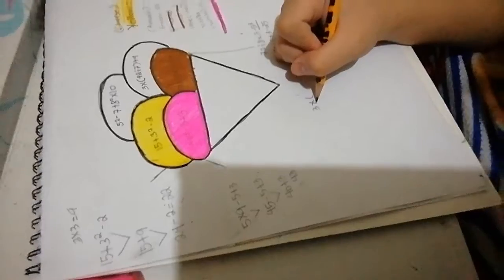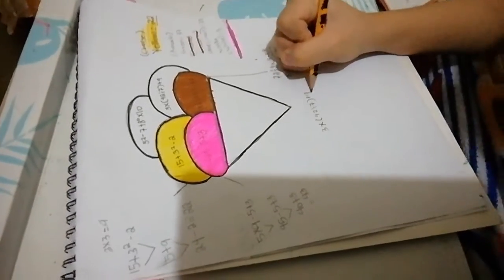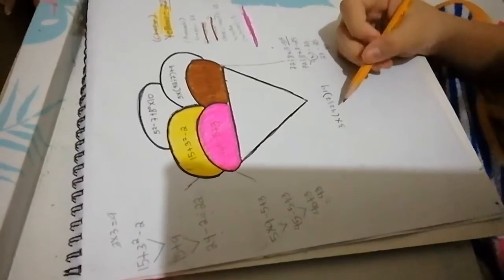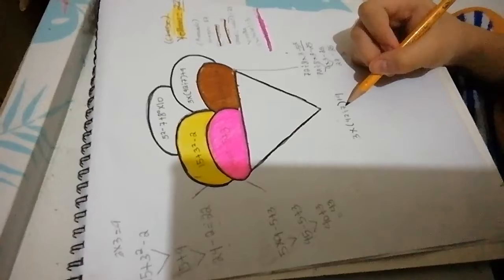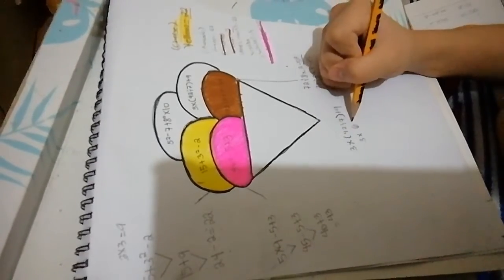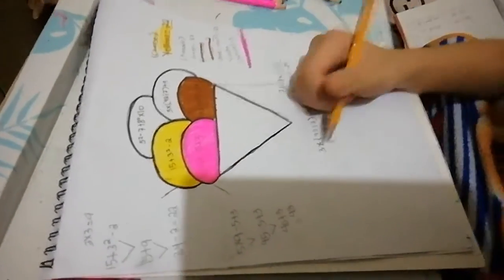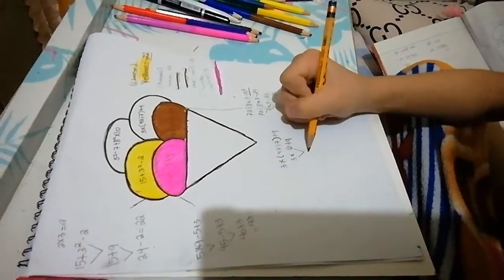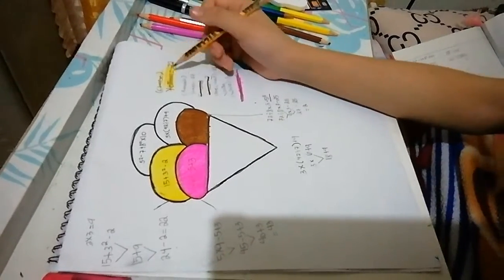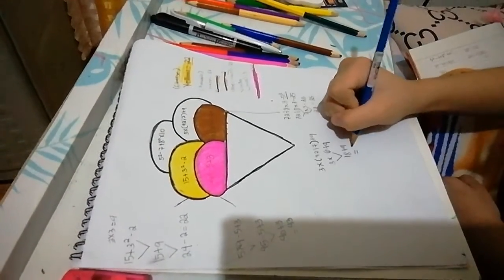3 times, parentheses, 42 divided by 7, close parentheses, plus 9. Since there's a parenthesis, we solve that first. 42 divided by 7 is 6. Then we bring down the 3 times, and the plus 9. Since multiplication comes first, 3 times 6 is 18 plus 9 equals 27. So avocado green is the answer.